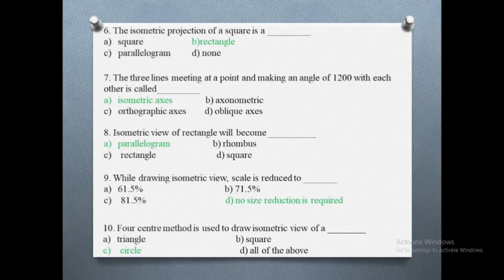Sixth question: the isometric projection of a square is. The options are: a) square, b) rectangle, c) parallelogram, d) none. The correct answer is rectangle.